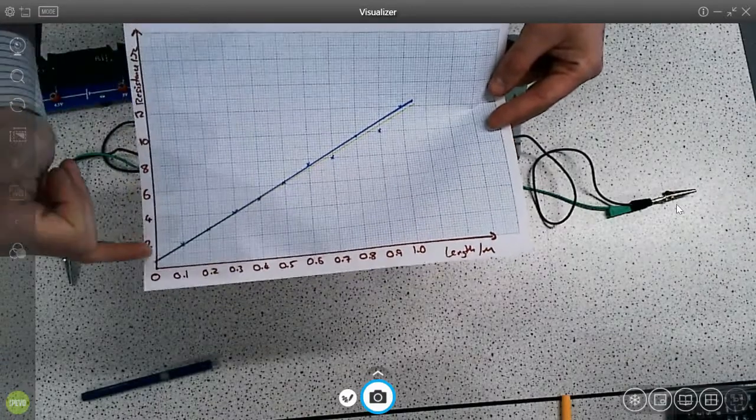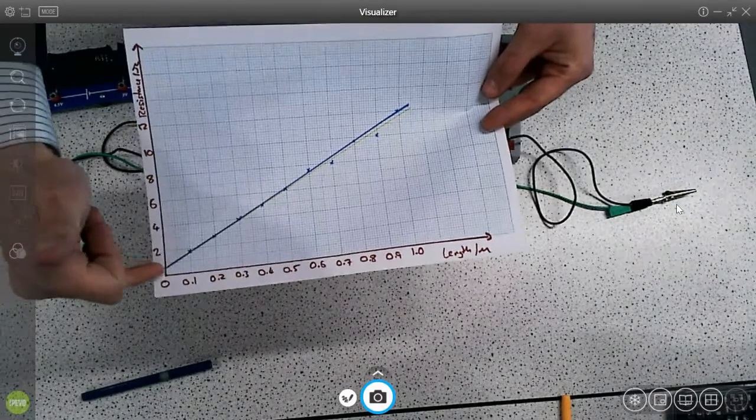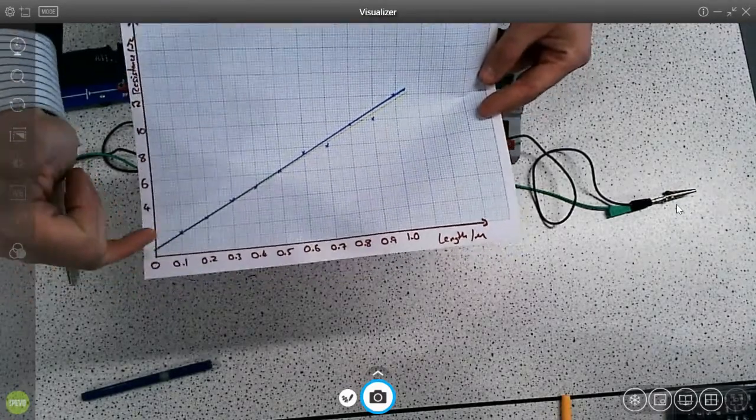This line doesn't go through zero, zero. You'd expect it to go through zero, zero. And if students are careful with this, it will go through zero, zero. If it doesn't, you could talk about what the potential errors are.